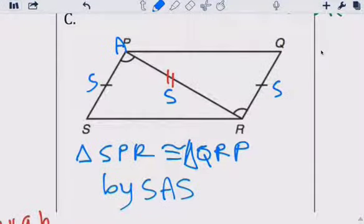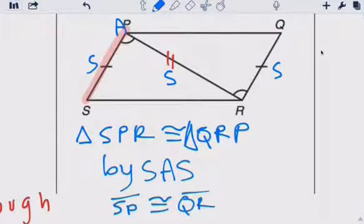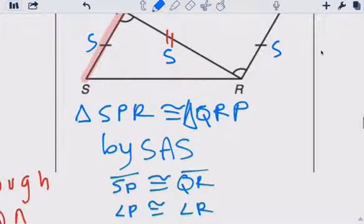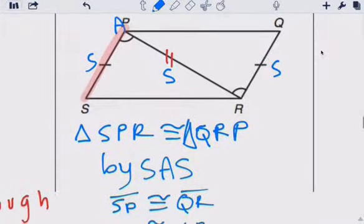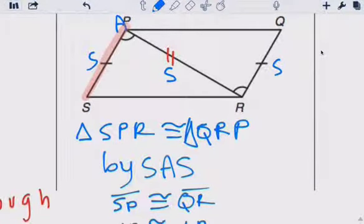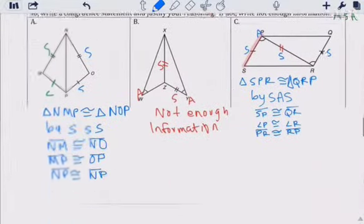Triangle Q, R, P. By side, oh, side, angle, side. That's the first side. It's this one here. S, P, is congruent to Q, R. Angle, it's angle P, is congruent to angle R. And side, the next, last side, is side P, R, is congruent to R, P.